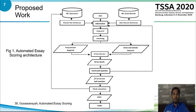This is the automatic essay scoring architecture. In general, an essay test or description question requires students to answer in the form of describing, explaining, discussing, covering, giving reasons, and other similar forms in accordance with the demand of the question using their own words and language. So the test requires the ability of students to generalize their ideas through written language.